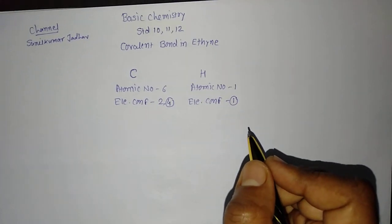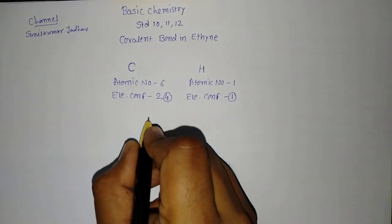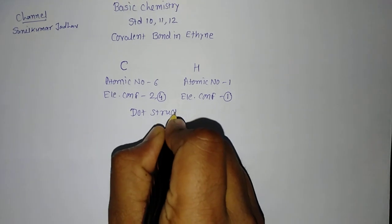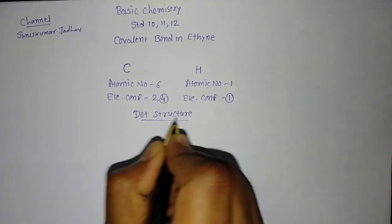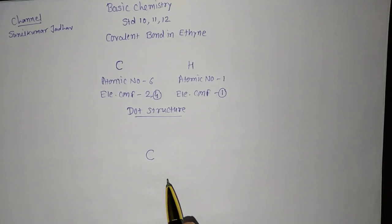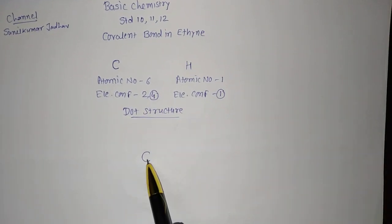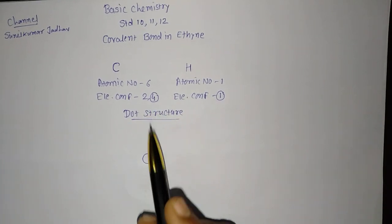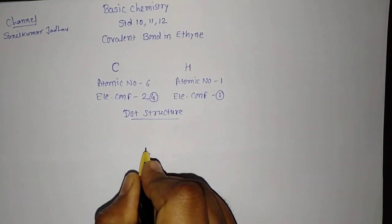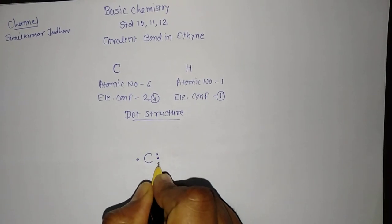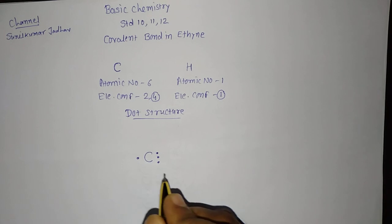How does the covalent bond form, let us see that. For that, I will write it with the help of dot structure. You know in dot structure, we are showing the outermost number of electrons in the outermost orbit around it. So, in carbon 4 electrons are there, I will write 1, 2, 3 and 4 because here it is going to form the triple bond.